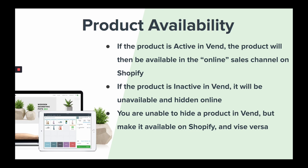There are two additional things to keep in mind. The first is that you are unable to have a product available in Vend but unavailable on Shopify, or vice versa — the state of your products must match in both platforms. The second is that you are unable to have specific variants hidden from Shopify. If you make a single variant inactive in Vend, it will still be available on Shopify for sale.